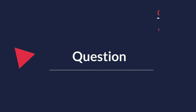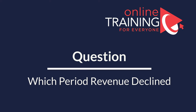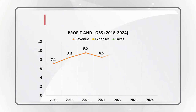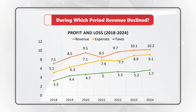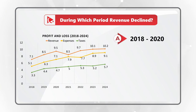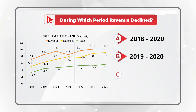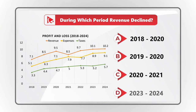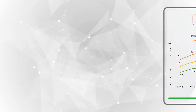And now it's time for you to practice your skills. You're presented with a chart of profit and loss between 2018 and 2024, showing revenue, expenses, and taxes. You need to determine during which period revenue declined. Choices: A. 2018 to 2020, B. 2019 to 2020, C. 2020 to 2021, and D. 2023 to 2024. With the skills you've learned, please identify the answer and post it in the comment section so I can give you feedback.